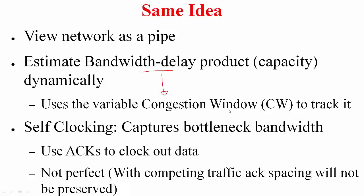A variable called the congestion window tracks the bandwidth-delay product. Just as the sliding window protocol does, we use self-clocking to determine the bottleneck bandwidth and use ACKs to clock out data. The new contribution is that after understanding the problem motivation and subtleties of the sliding window protocol, we can better appreciate what congestion control achieves.